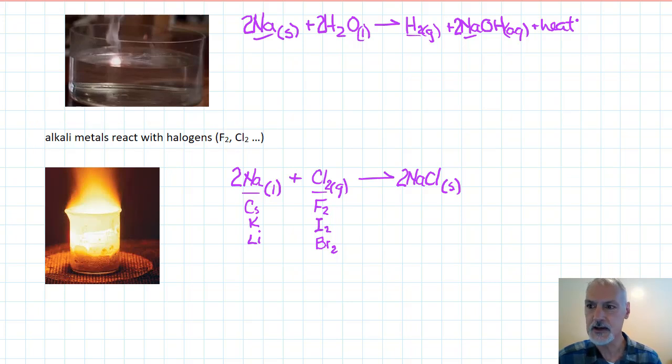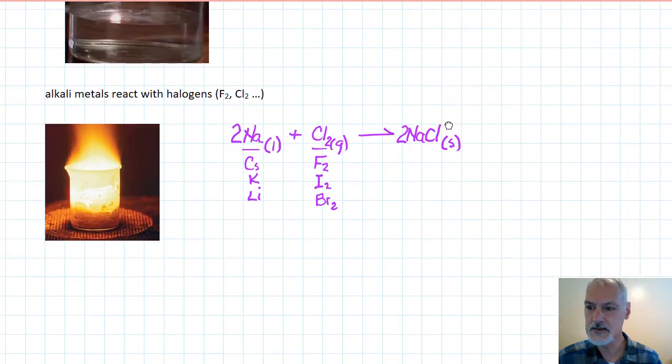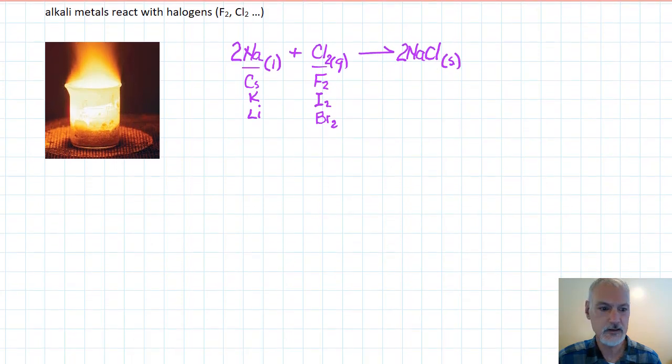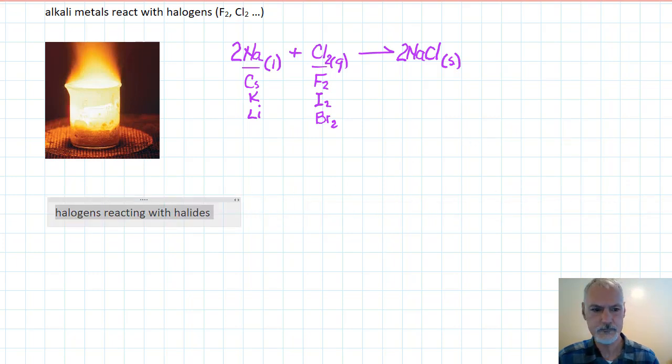The last type of reaction I want to look at are halogens reacting with ions of themselves. We call this the halogens reacting with the halides.